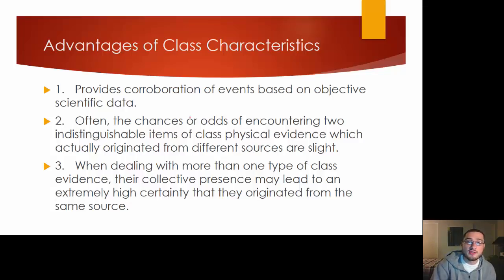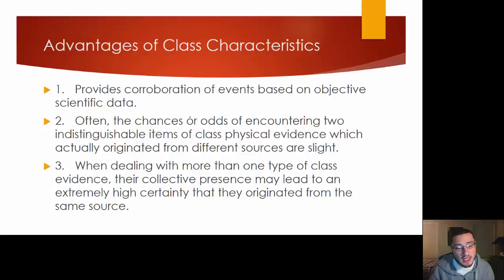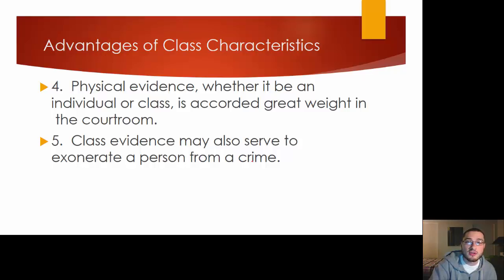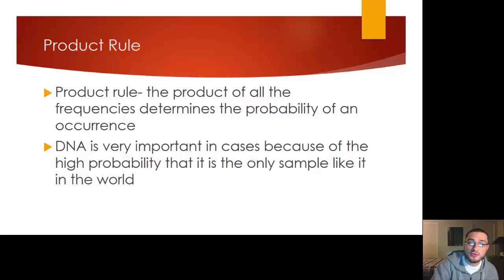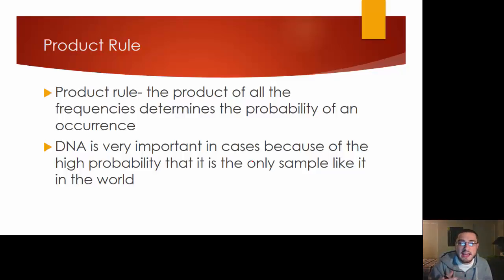Some advantages: class evidence provides corroboration of events based on objective scientific data. Often the chances of encountering two indistinguishable items of class physical evidence that actually originated from different sources are slight. When dealing with more than one type of class evidence, their collective presence may lead to an extremely high certainty that they originated from the same source. Physical evidence — whether individual or class — is accorded great weight in the courtroom. The product rule is what we use when combining pieces of class evidence to show we can prove it was this suspect to a high degree of certainty.